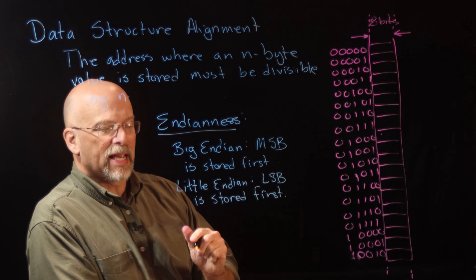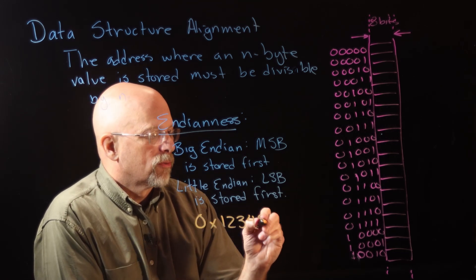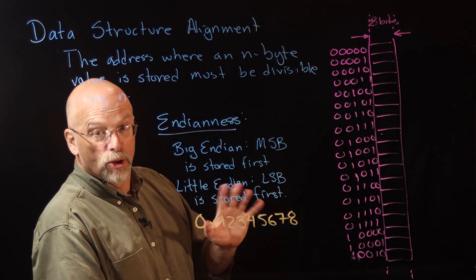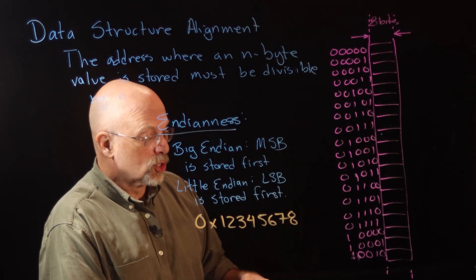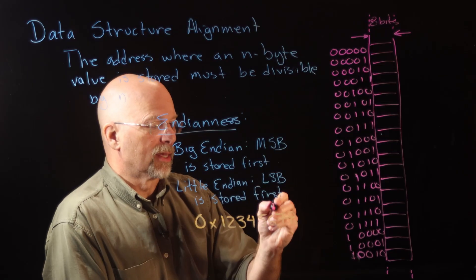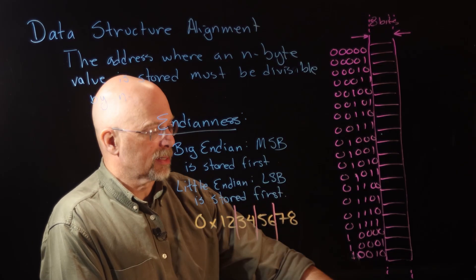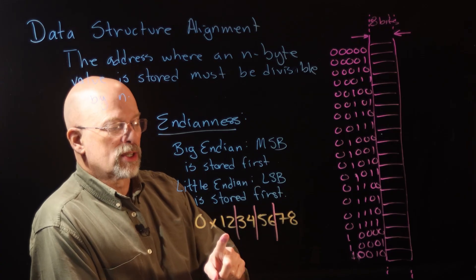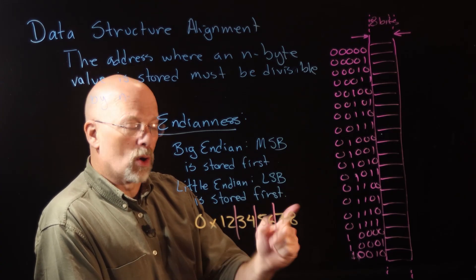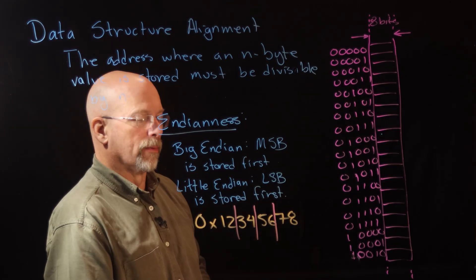Let's say we have the hexadecimal value 0x12345678 — that's 32 bits, four bytes. We know we'll divide this into four bytes and store them one byte at a time. The question is: do we store 12 first, then 34, then 56, then 78 — or do we store 78 first, then 56, then 34, then 12?